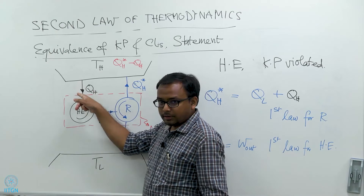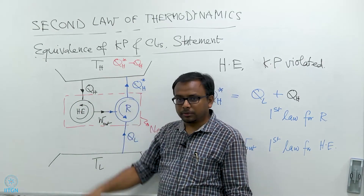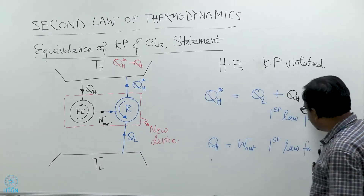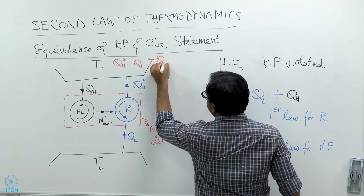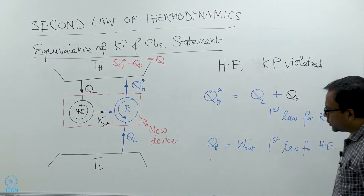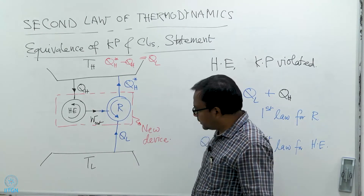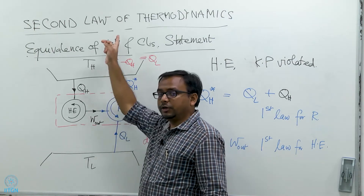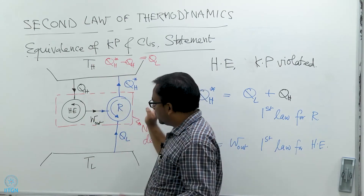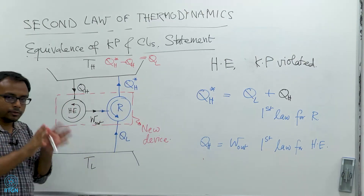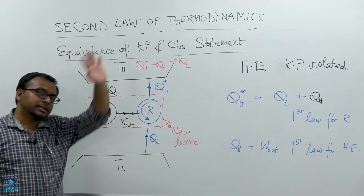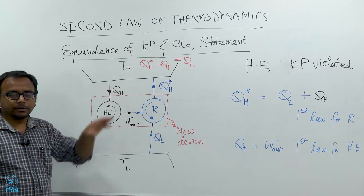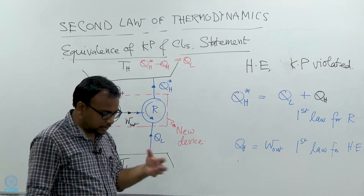This device takes in Q_H heat but gives out Q_H* to the high temperature reservoir. The net heat supplied to the high temperature reservoir is Q_H* minus Q_H, which from the first law is simply Q_L. So in conclusion, this device takes Q_L amount of heat from the low temperature reservoir, supplies the same net amount of heat to the high temperature reservoir, without any work input from the surroundings — which means it is not producing any other effect other than transferring heat Q_L from a low temperature reservoir to a high temperature reservoir, and this by definition violates the Clausius statement.